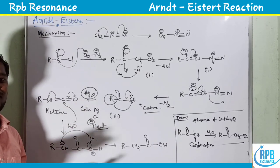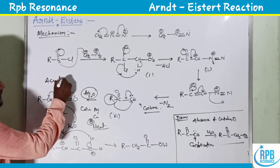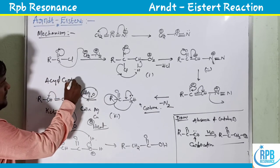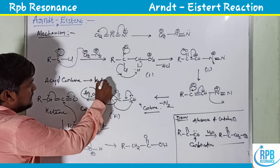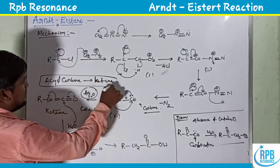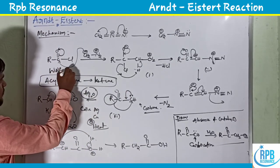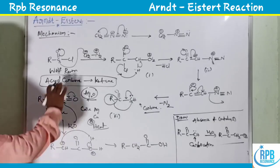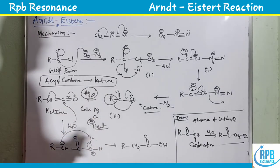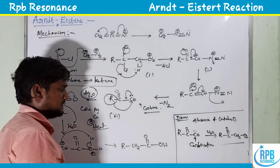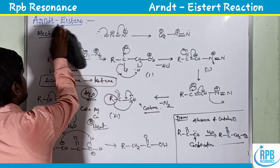The conversion of acyl carbene to ketene is known as the Wolf rearrangement. This is the overall reaction mechanism of the Arndt-Eistert reaction. Now let's move on to some examples.